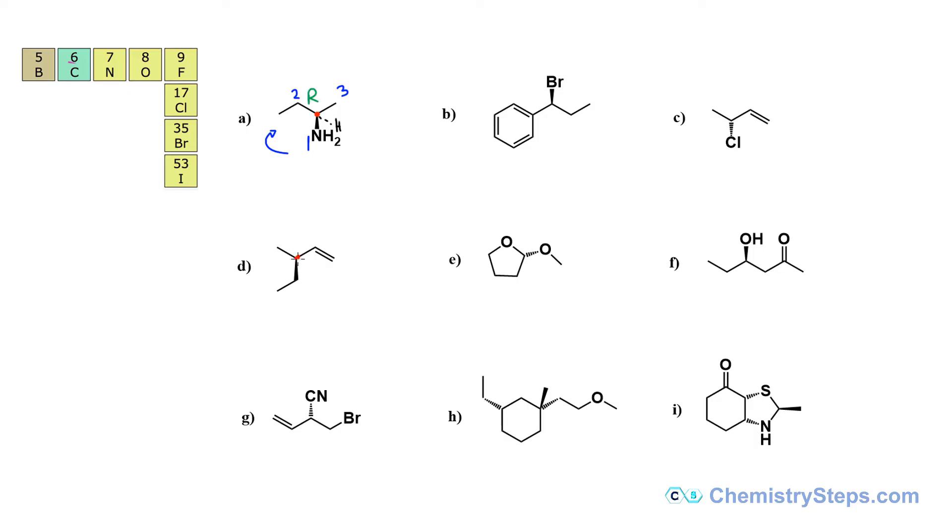Next one, we have one chiral center here and we'll assign the configured priorities. So here's the carbon double bonded to another carbon and that's counted as two carbons connected to it. That's why this will be number one, number two, and number three, methyl with the three hydrogens and of course H is pointing away from us.